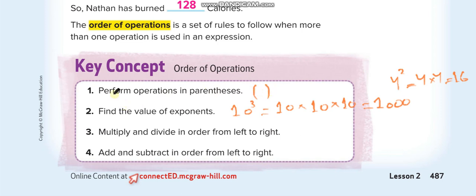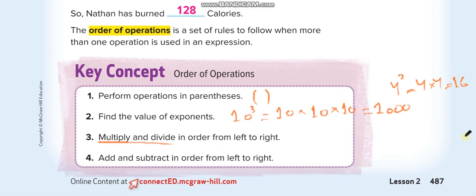So the first thing you solve is the parentheses, and the second thing is to find the value of exponents. The third thing is to multiply and divide in order from left to right. Whatever comes first — if multiplication comes first, solve that; if division comes first, solve that. But if addition comes first, you do not solve that yet.